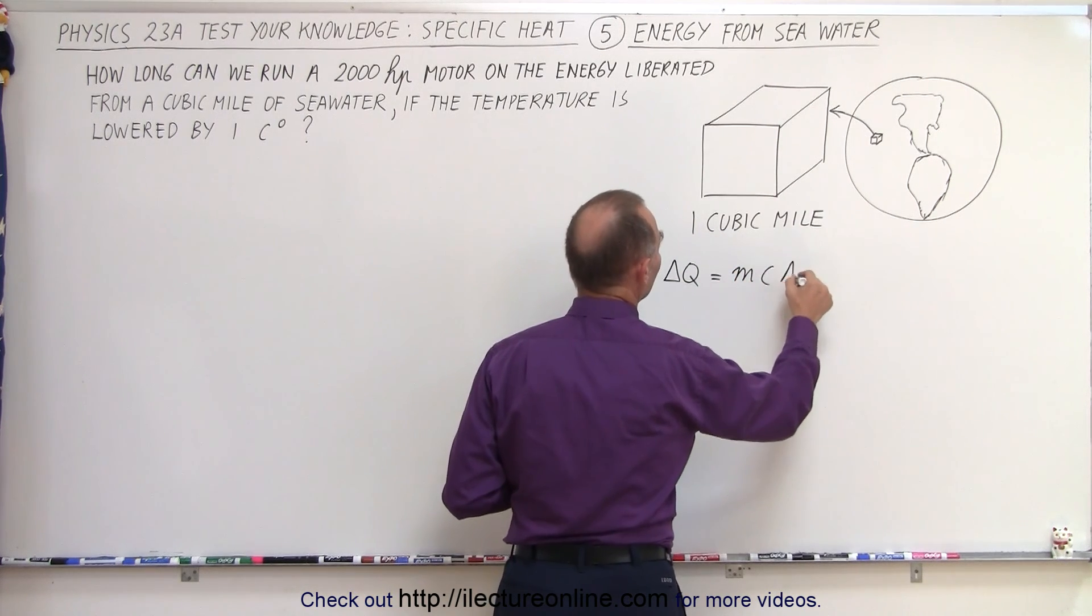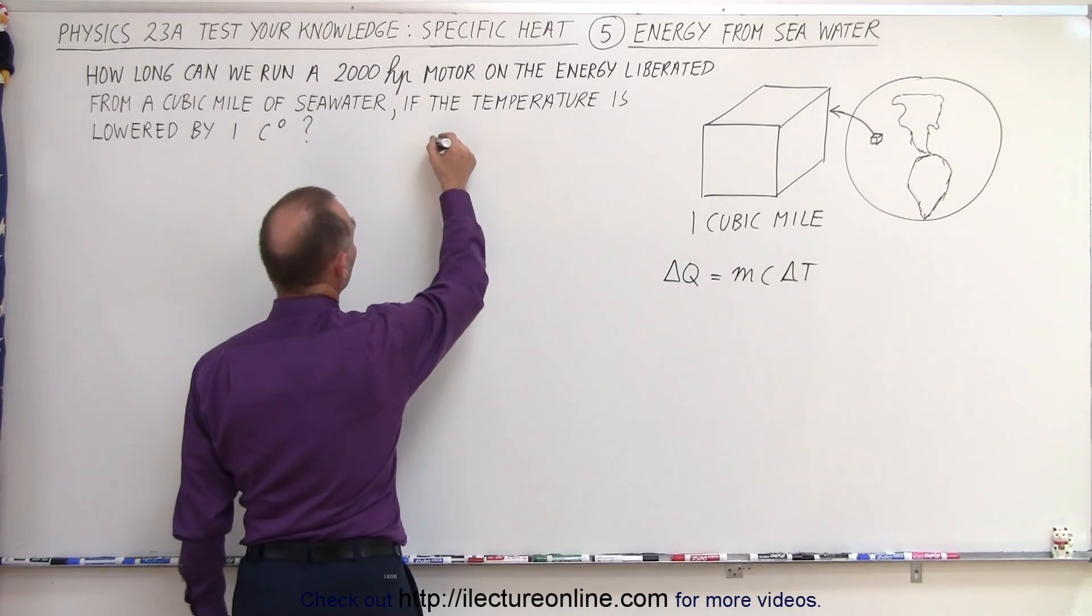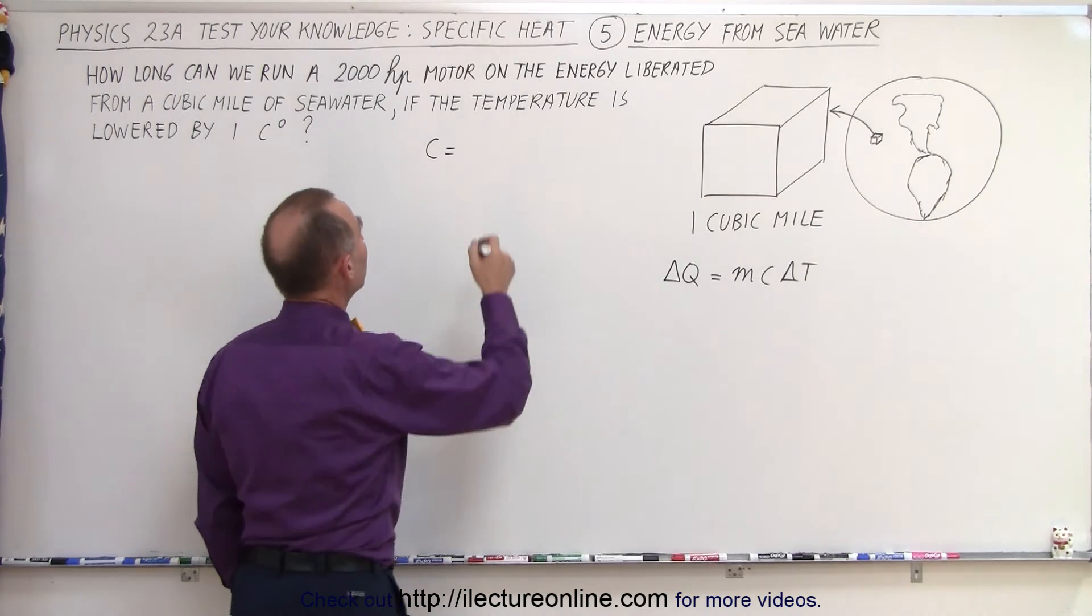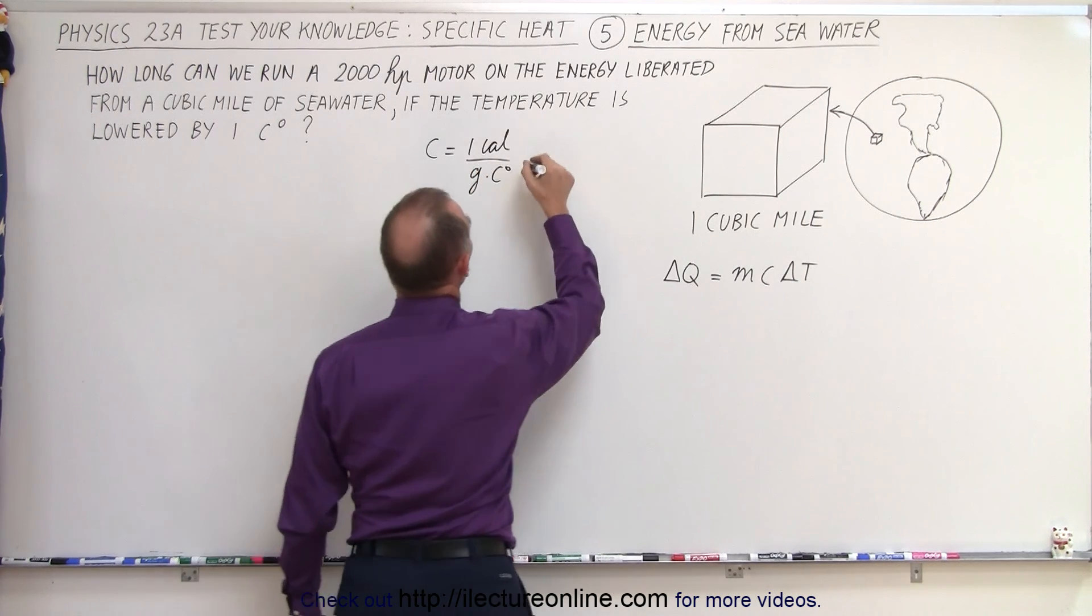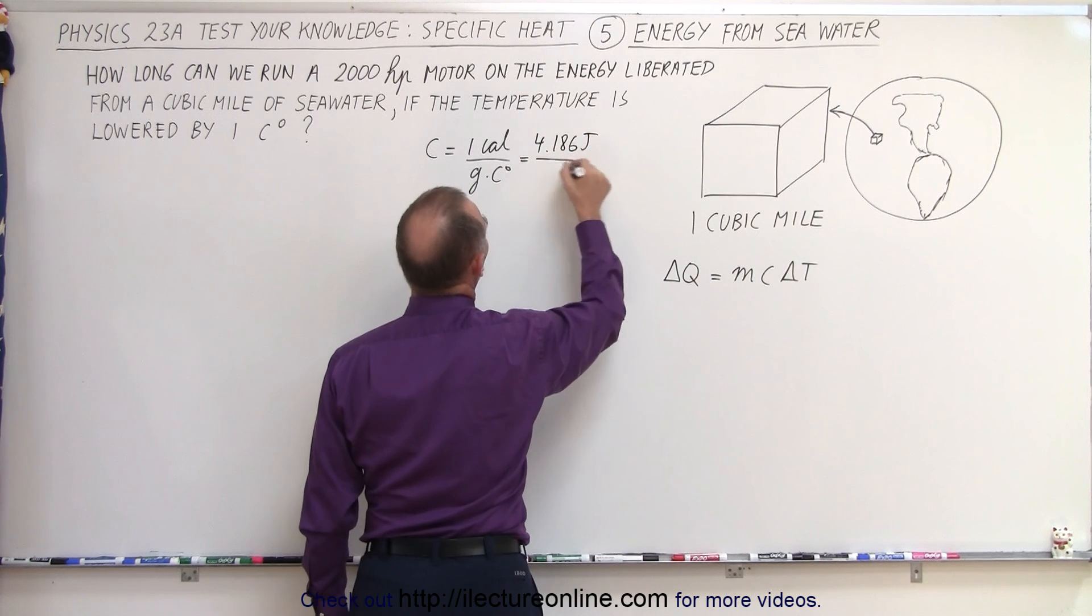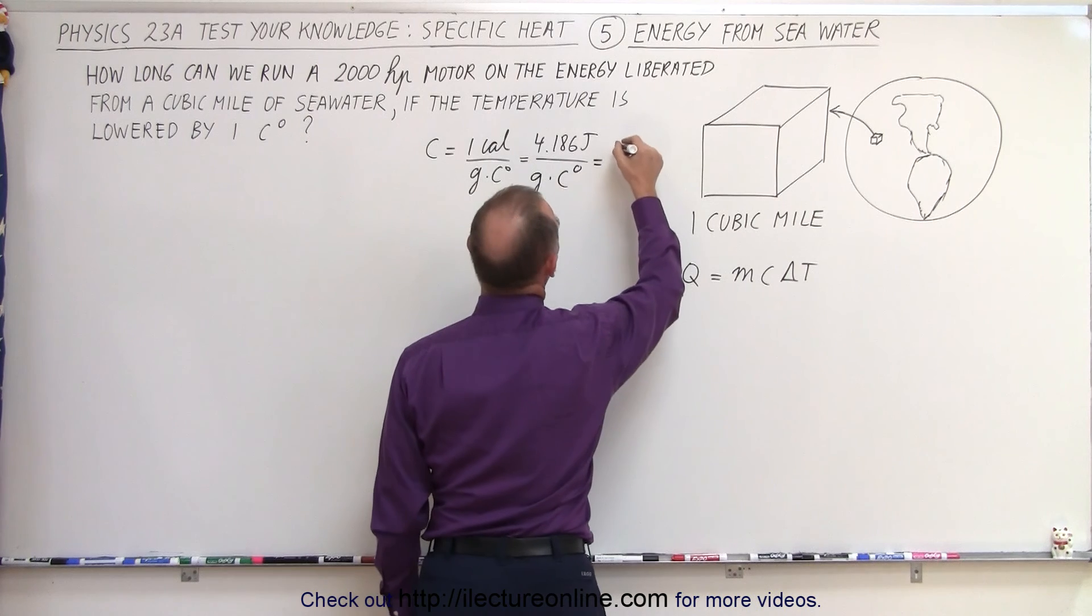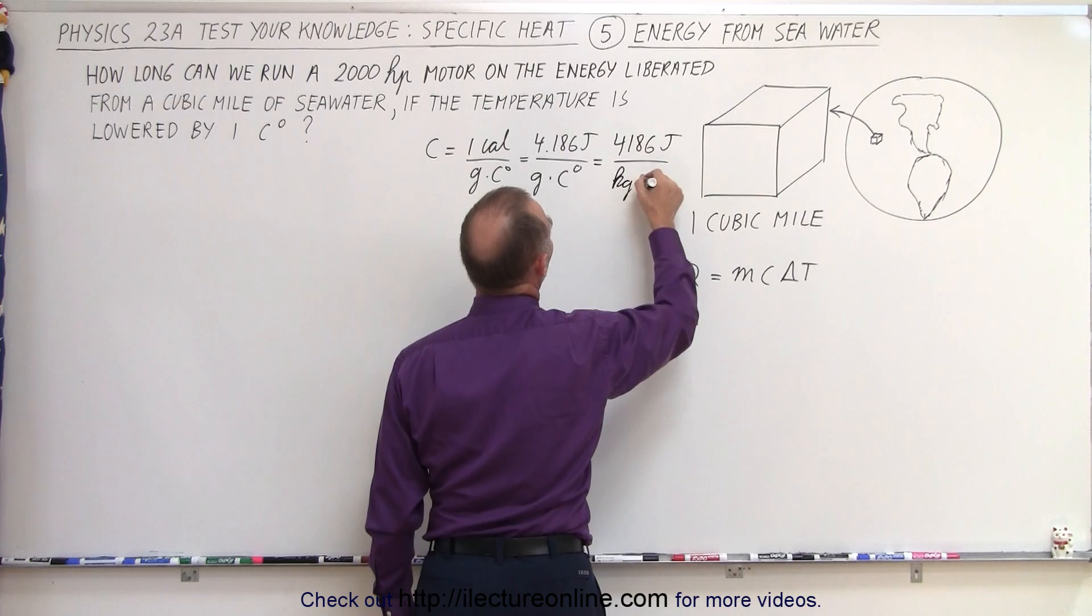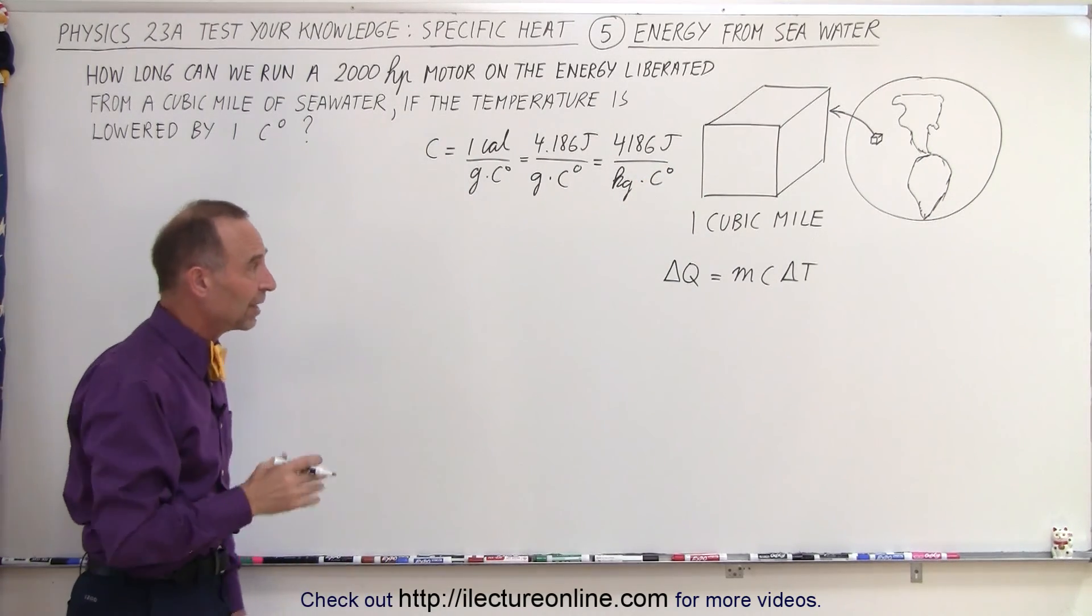So the amount of heat we get out of a cubic mile of seawater is equal to mc times delta T. Now for seawater, let's take it as regular water. That would be equal to one calorie per gram per Celsius degree which is equal to 4,186 joules per gram per Celsius degree which is equal to 4,186 joules per kilogram per Celsius degree. That's the specific heat of water.